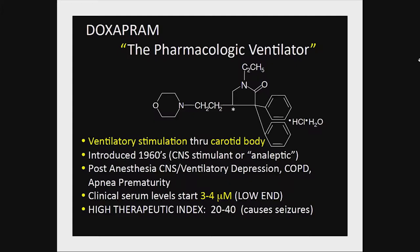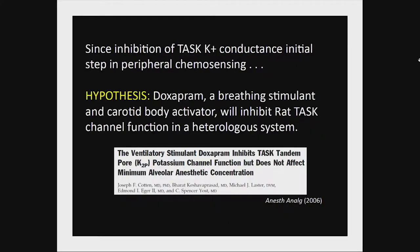Doxapram is a ventilatory stimulant that acts, at least in part, through stimulation of the carotid body. It was introduced in the 1960s and had a clinical role in reversing CNS and ventilatory depression after anesthesia. It's also been used to treat COPD patients and infants with apnea of prematurity. It's a very low-potency drug in the micromolar range. This led us to the hypothesis that if inhibition of potassium channels is an important step in carotid body chemosensing, doxapram may act by inhibiting these potassium channels.